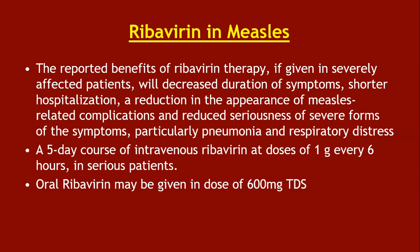Regarding ribavirin in measles, the reported benefits of ribavirin therapy in severely affected patients include decreased duration of symptoms, shorter hospitalization stay, reduction in measles-related complications, and reduced seriousness of severe symptoms, particularly pneumonia and respiratory distress. A five-day course of intravenous ribavirin at a dose of 1 gram every six hours is used in serious patients; oral ribavirin can be given at 600 mg twice a day, but this therapy is reserved for serious measles patients and is not routine.